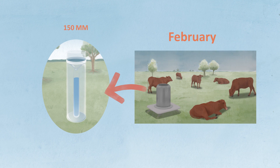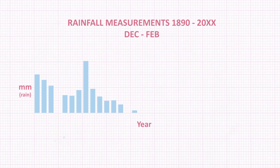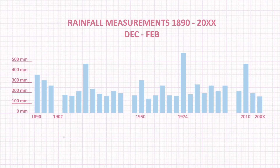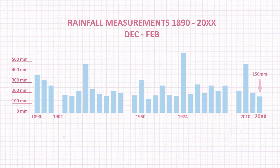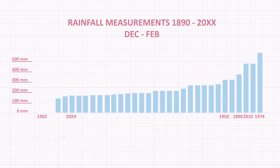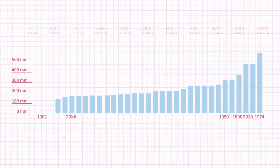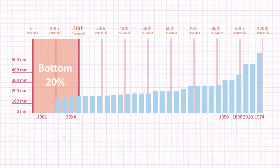It's all in the data here. These are the rainfall measurements for this region for every December to February period since 1890, from the oldest to the most recent. Here's our most recent three months rainfall, 150 millimetres. And here's a better three-month period, 450 millimetres, back in 2010. If we rearrange these measurements from the lowest to the highest rainfall amount, you can see the last three months of rainfall is below the 20th percentile because it's in the bottom 20 percent of rainfall measurements.